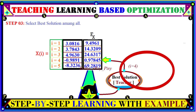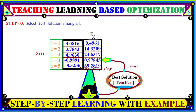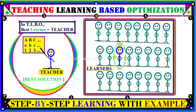In step three, we select the best solution among all. Since we know the best solution is the teacher, we compare the values and the best value among all is the fourth individual — that is the teacher value we will use in the teacher phase.